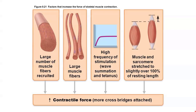The four factors are: the number of muscle fibres recruited or innervated, the size or diameter of the individual muscle fibres, the frequency of muscle stimulation, and the resting length of the sarcomere or the muscle.